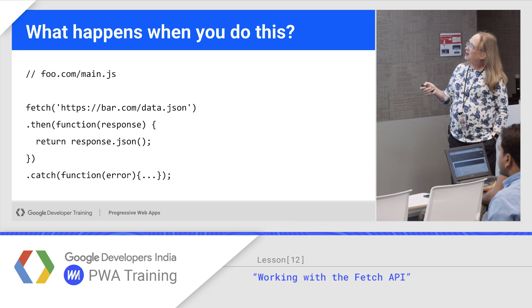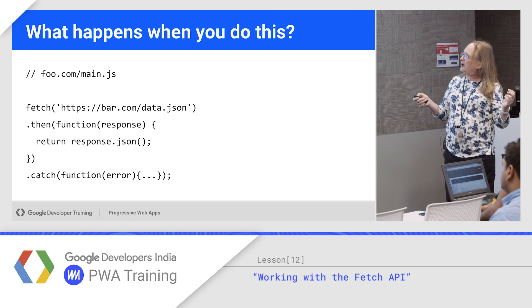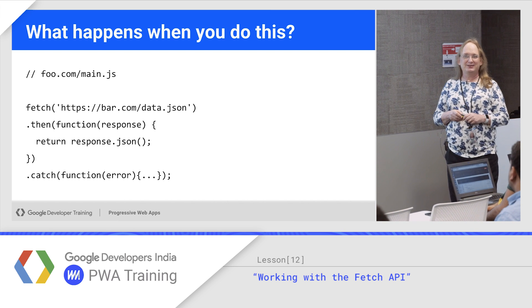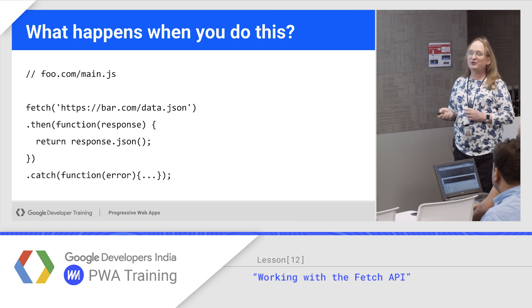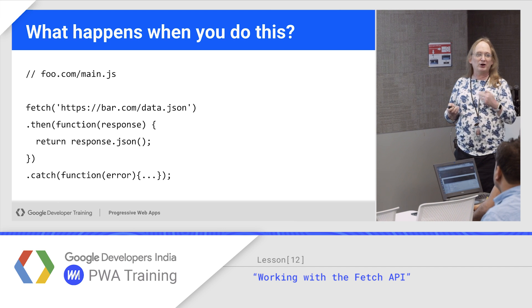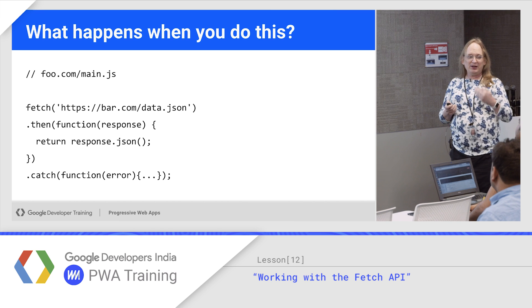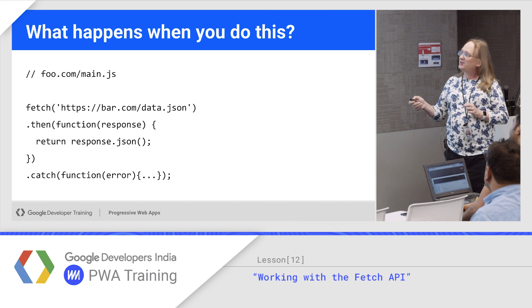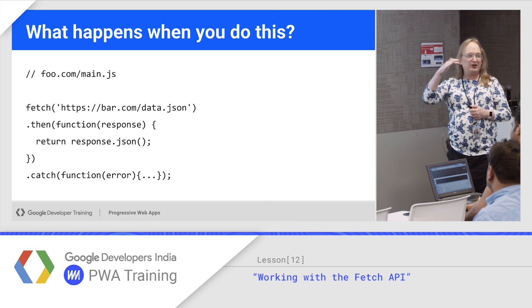Let's say we're on foo.com and we do a fetch across the network to a different website, bar.com. It in fact does fail, because of the single origin rules in the browser, which say that a page making a network request can only fetch data from the same origin. There are some exceptions to that rule, but JSON is not one of them. So if I'm on foo.com and want to go to bar.com, that's two different origins — a cross-origin request — and the browser will deny that by default.